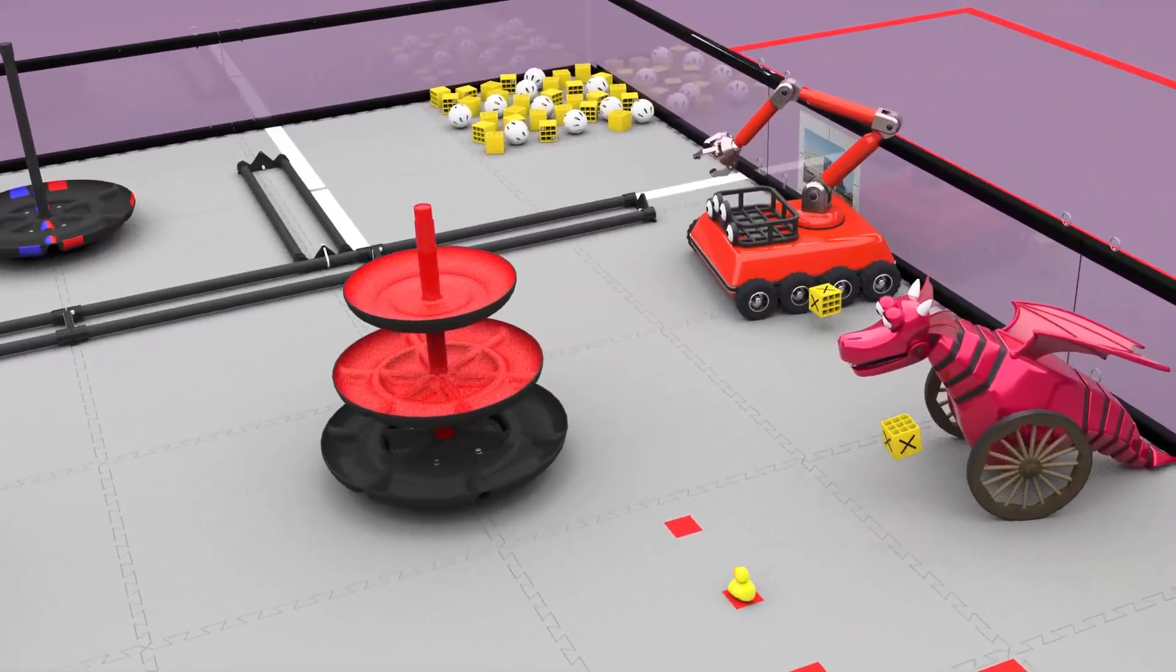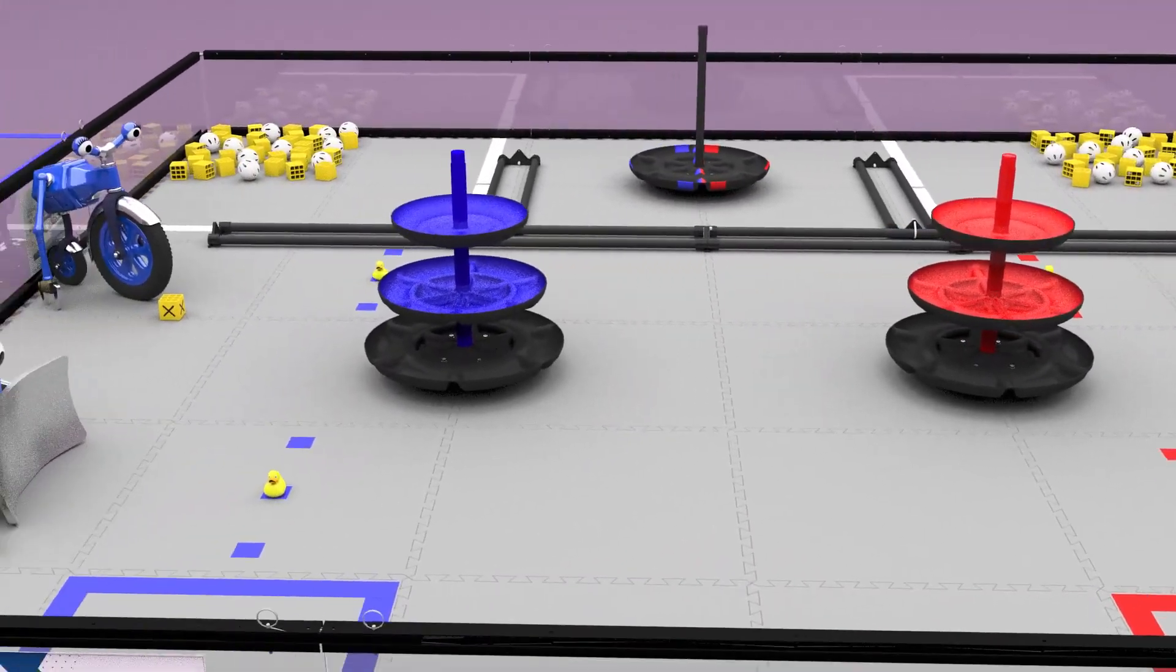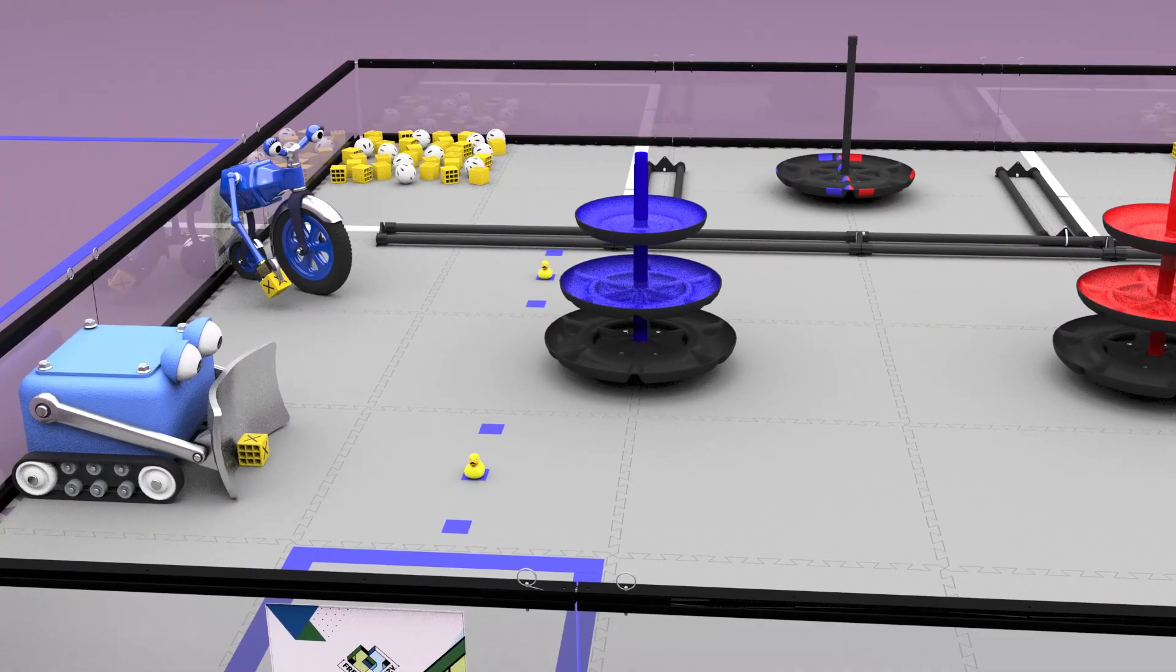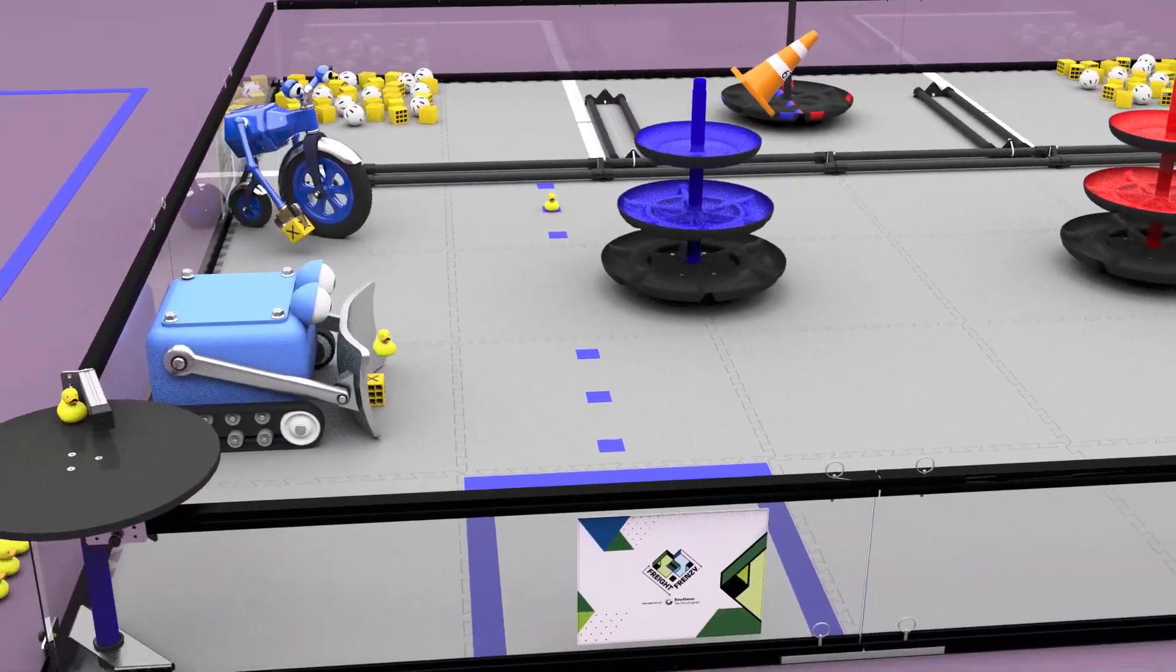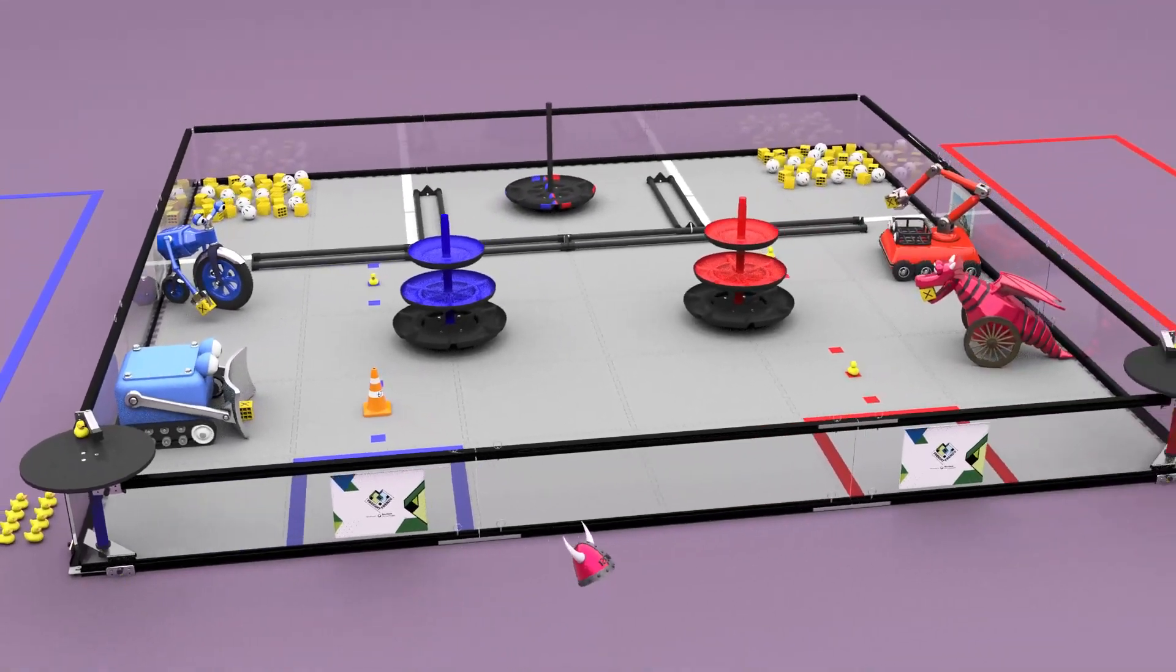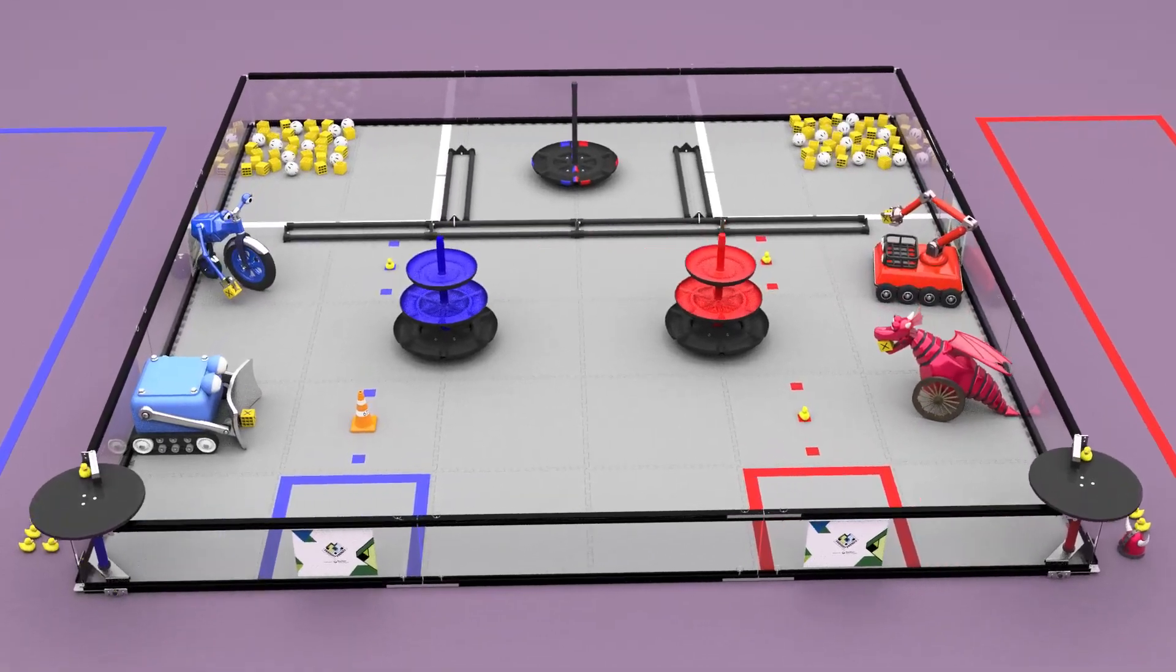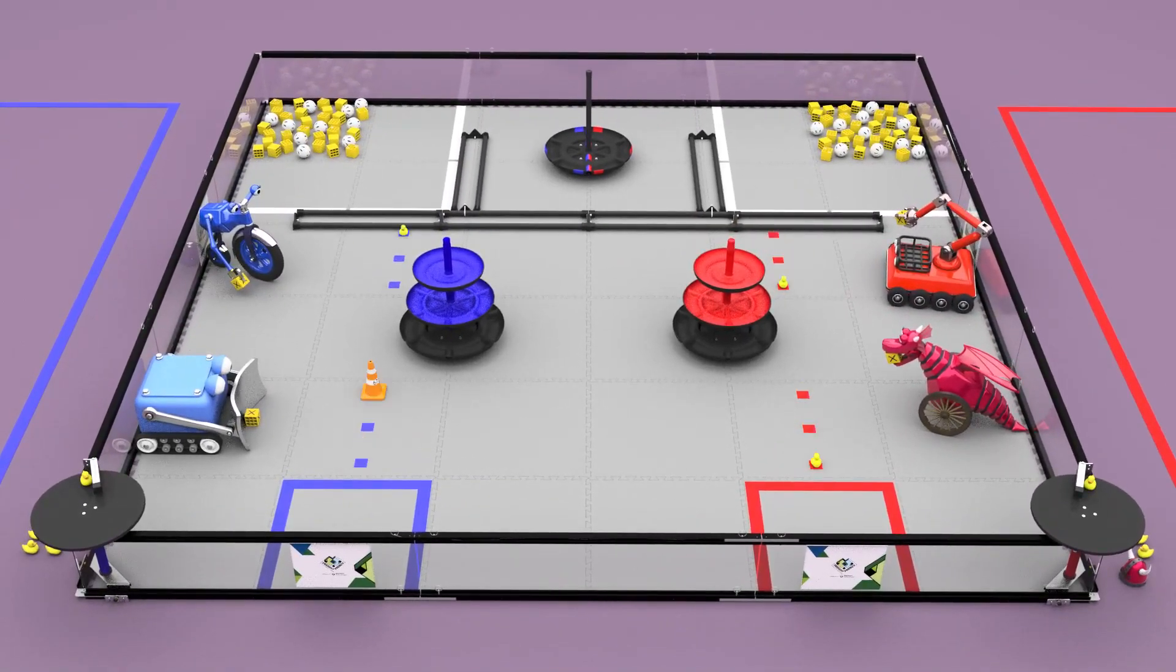The teams then place one pre-load box for each robot. A team may then decide to use their own shipping element in place of a duck on the barcode, or store their shipping element in the loading dock. The duck or shipping element on the barcode is then randomized to one of three locations.